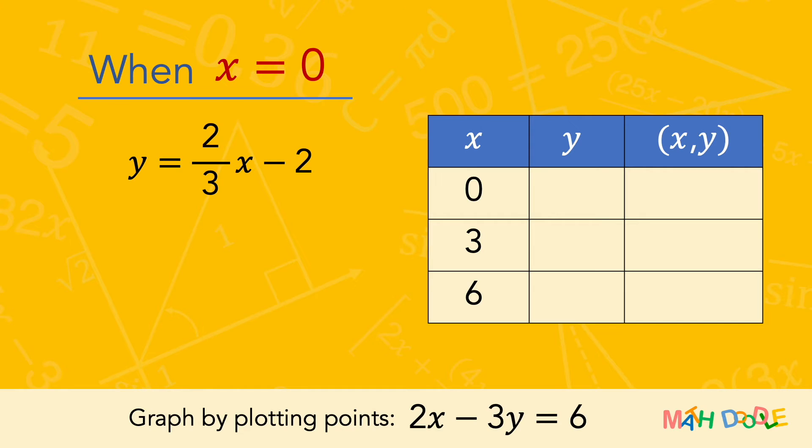First, to find the value of y when x is 0, we are going to substitute 0 for x. 2 thirds times 0 is 0, and this leaves only minus 2. So, when x is 0, y is minus 2. This tells us that the line of the equation passes through the point 0 minus 2.